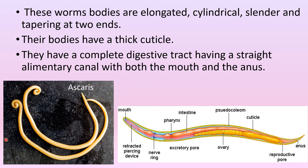These worms have a complete digestive tract having a straight alimentary canal with the mouth and the anus. Here, this is the mouth and this is the anus.